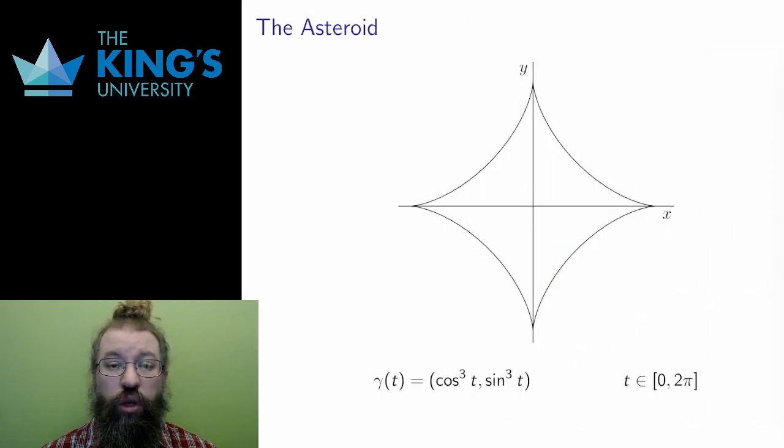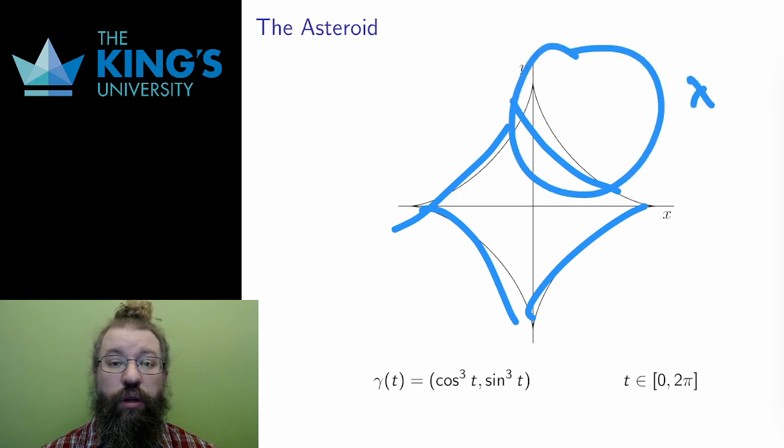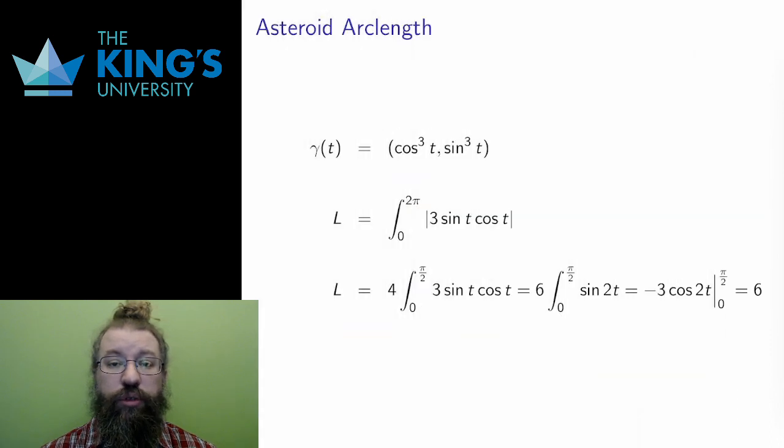Notice that this curve has 4 copies of the same arc, just reflected and rotated. To calculate its length, I can calculate the length of 1 quarter of it and then just multiply by 4. This type of symmetry argument is extremely valuable in geometry problems, like the length of curves. If I only do 1 fourth of the integral, the absolute value problem disappears.